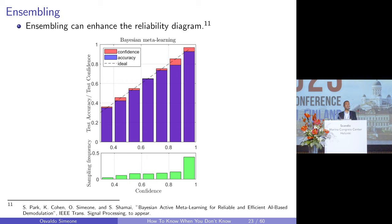Using ensembling can improve calibration very significantly. For the same modulation-over-fading-channel example, we designed a special way to define the distribution of models using Bayesian meta-learning — an approach that is Bayesian and uses data from multiple related problems. The gaps between perfect calibration and actual performance are now much smaller, and the model is much better calibrated.